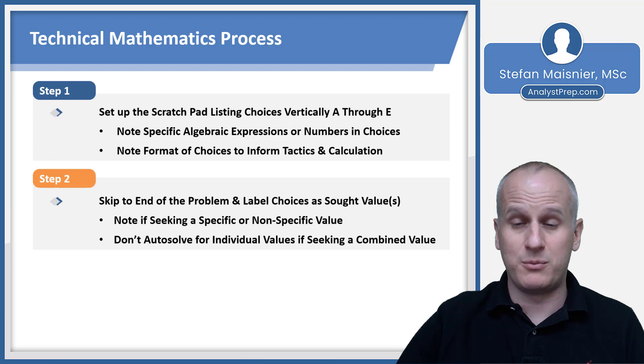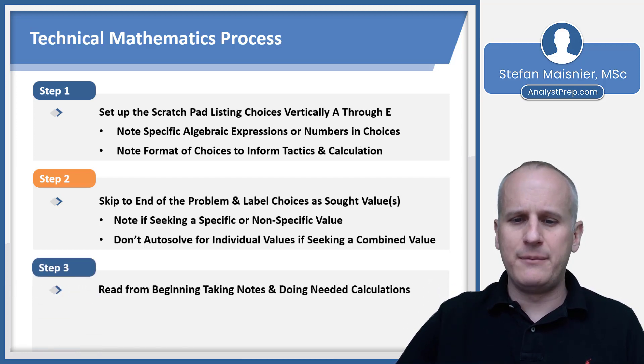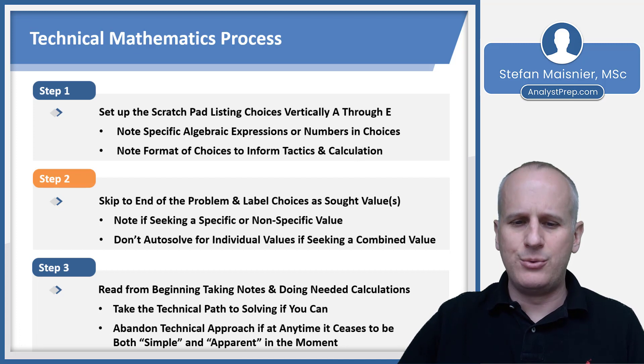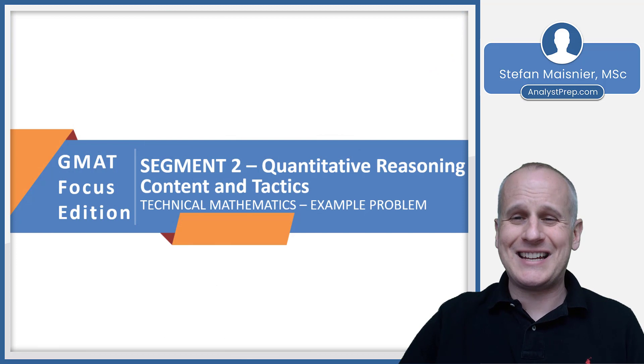Then read from the beginning, taking notes and doing needed calculations. Take the technical path to solving if you can. But as soon as that approach ceases to be both simple and apparent in the moment, prepare to do an alternative tactic, or potentially make this one of the questions that you guess in under 20 seconds and leave to potentially return to at the end of the section, provided that you have time to do so. So now let's head on over to our whiteboard and take a look at how to execute the technical math approach with an example problem that you can replicate in your own drills.